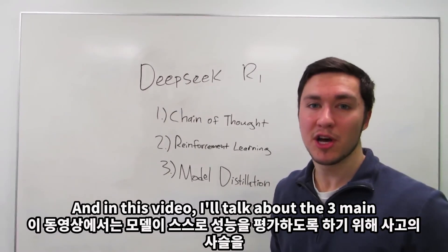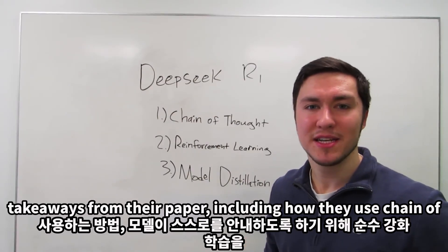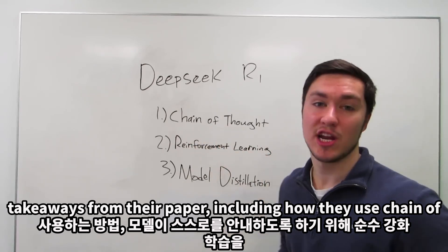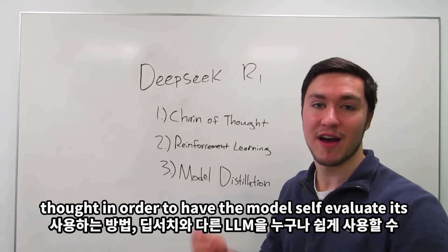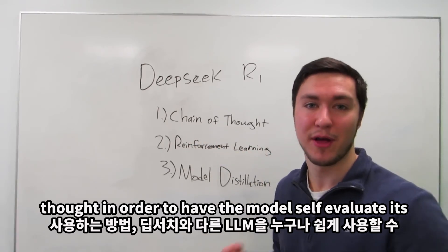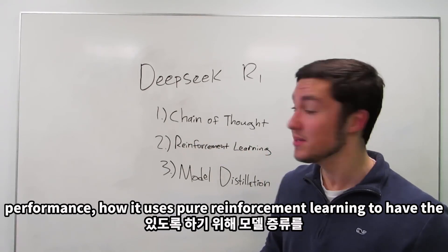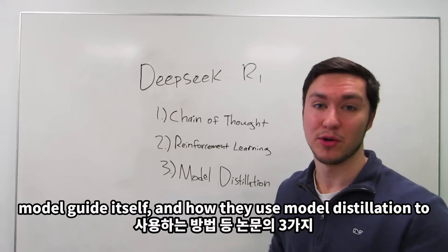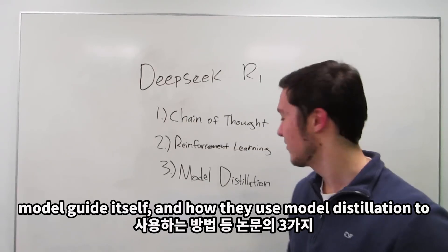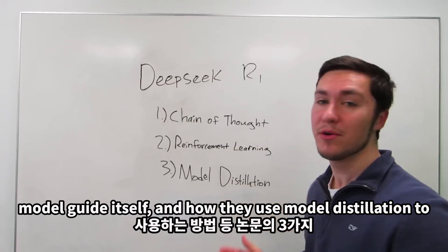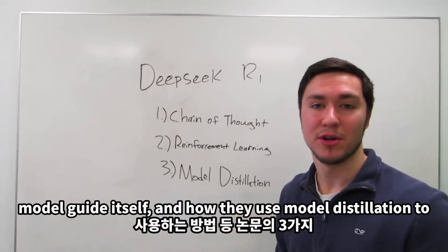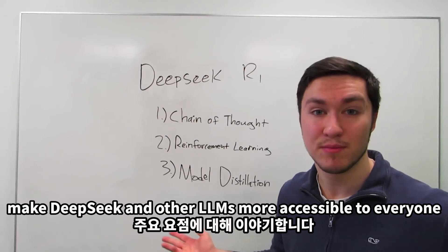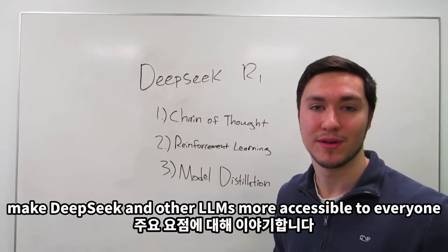In this video, I'll talk about the three main takeaways from their paper, including how they use chain of thought in order to have the model self-evaluate its performance, how it uses pure reinforcement learning to have the model guide itself, and how they use model distillation to make DeepSeek and other LLMs more accessible to everyone.